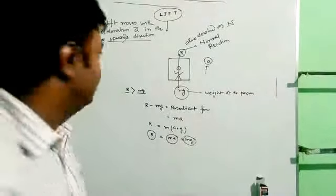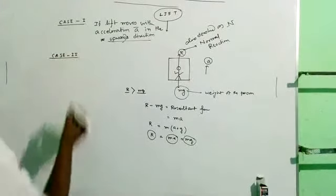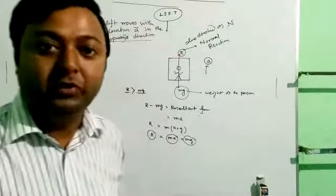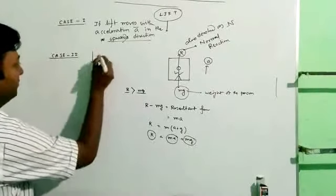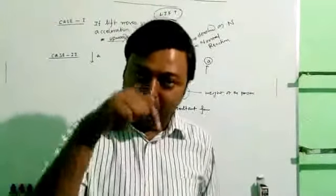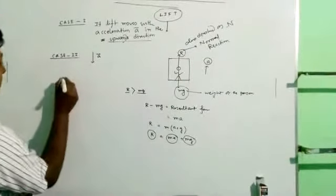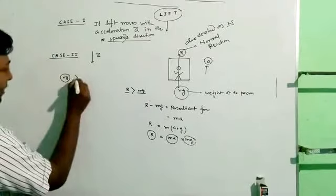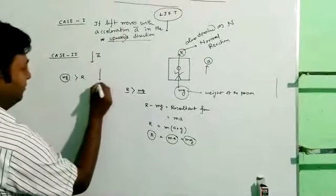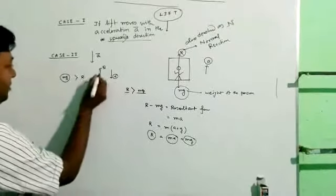Now we study the second case. Case 2: if the lift moves in the downward direction with an acceleration A. When the lift moves downward, Mg is greater than R, because the downward force Mg is larger. That means Mg is greater than R.